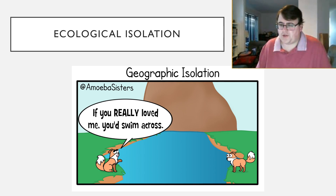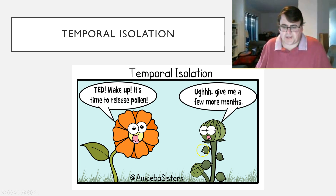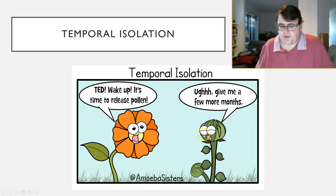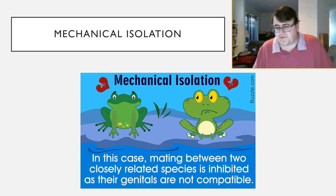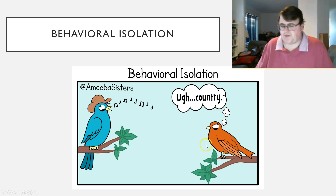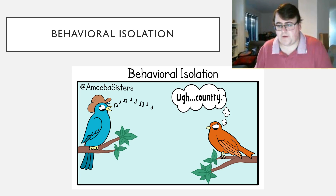Let's look at some examples. Geographic or ecological isolation: one fox here, another fox separated by a river — they can't get across, so they physically can't breed. Temporal isolation: one flower is ready to pollinate now, the other isn't sexually mature yet. Mechanical isolation: two different species with two different shaped genitalia — can't mate. Behavioral isolation: this orange bird is completely unimpressed by the bluebird's song — the mating song isn't working on a different species. Those are some examples of prezygotic mechanisms.